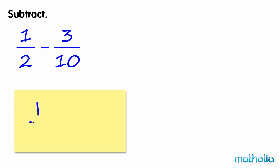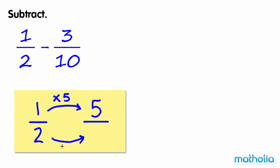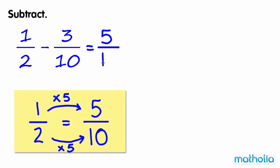Let's find an equivalent fraction of 1 half where the denominator is 10. 1 half is equal to 5 tenths. We can rewrite 1 half minus 3 tenths as 5 tenths minus 3 tenths.